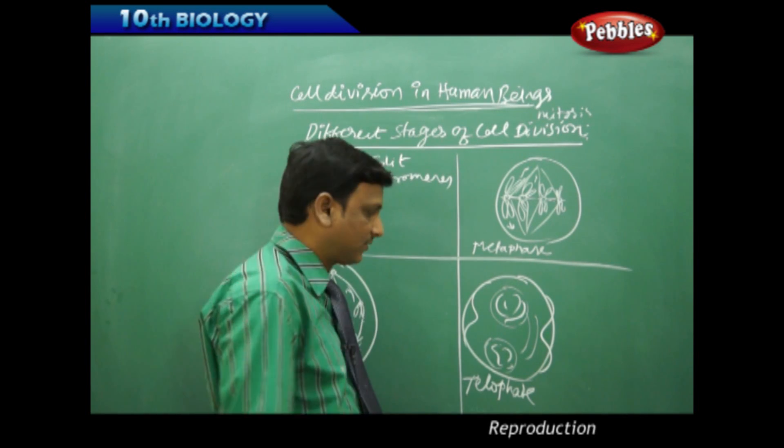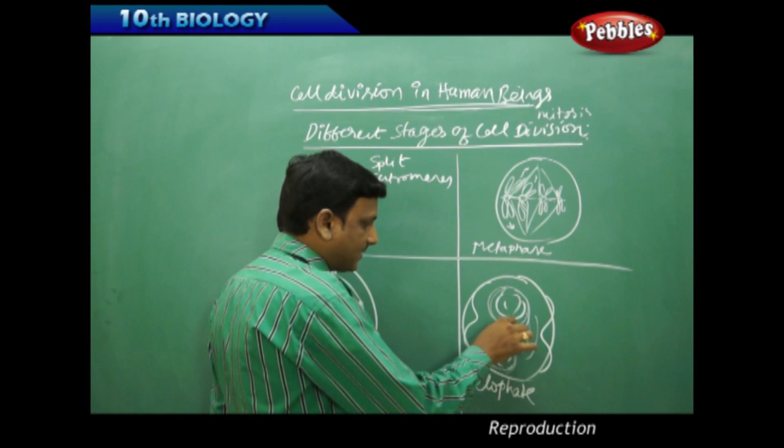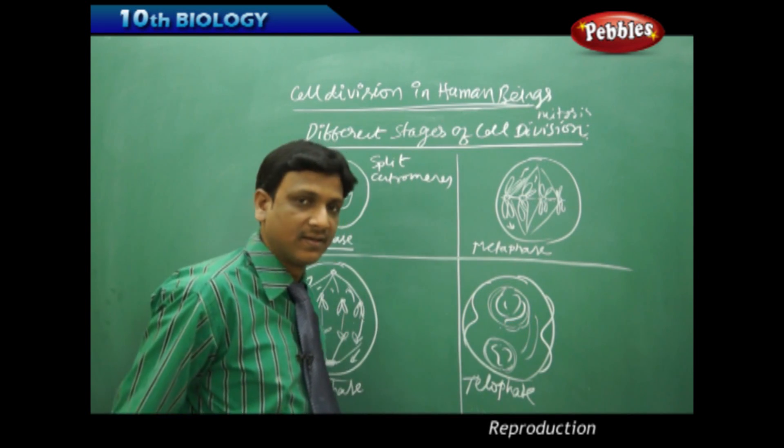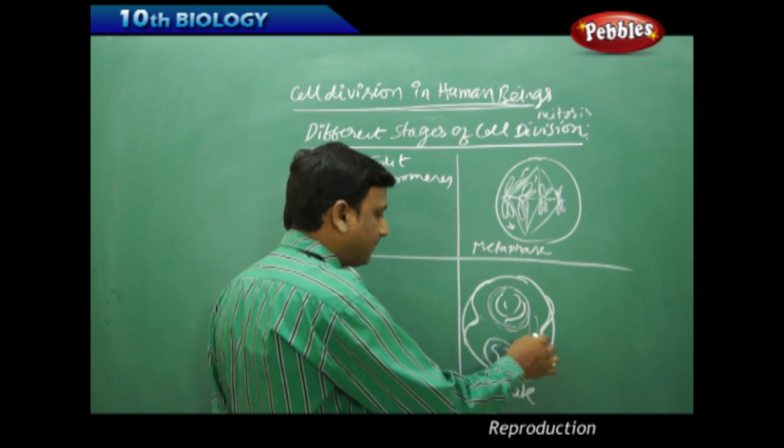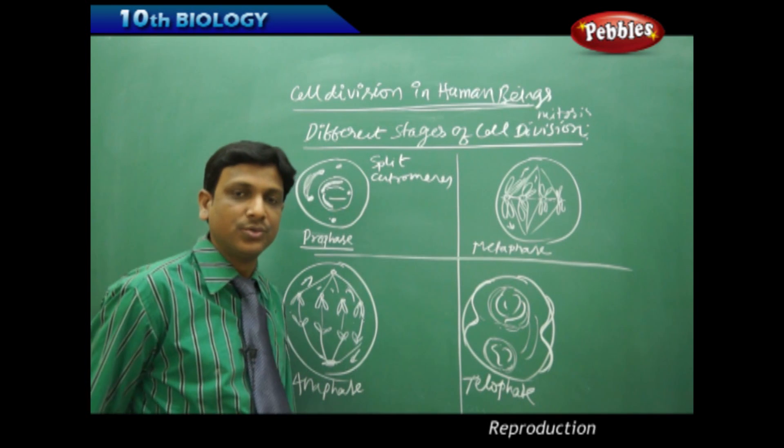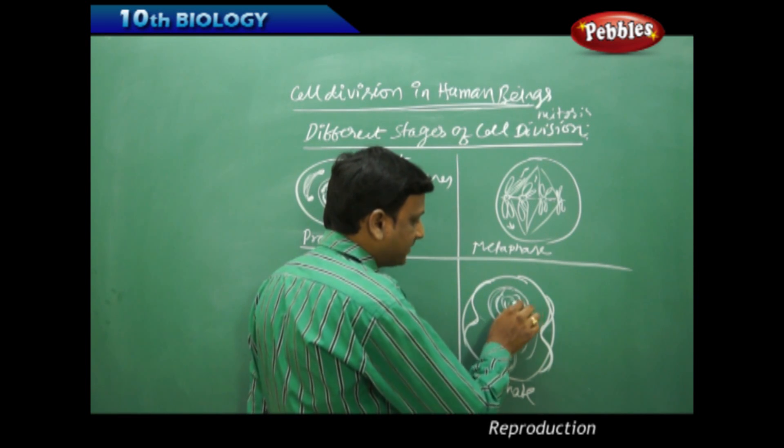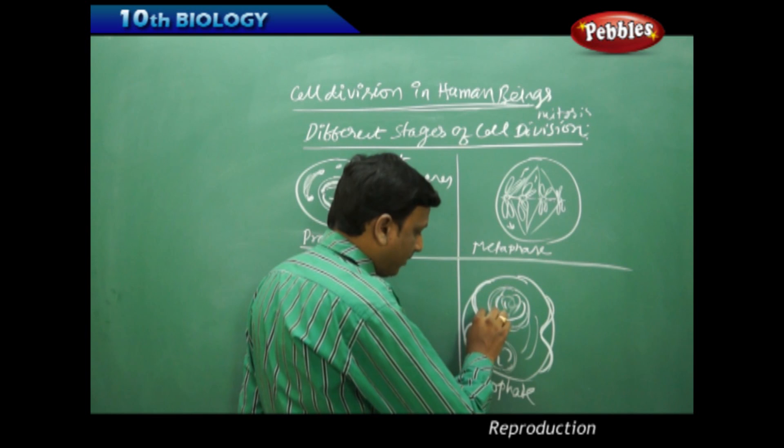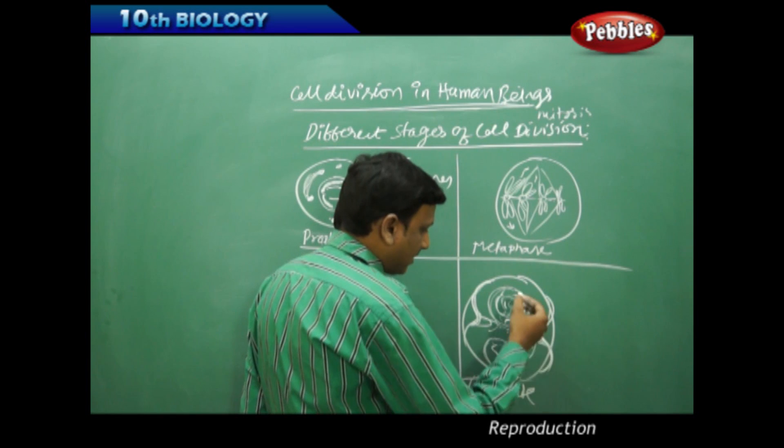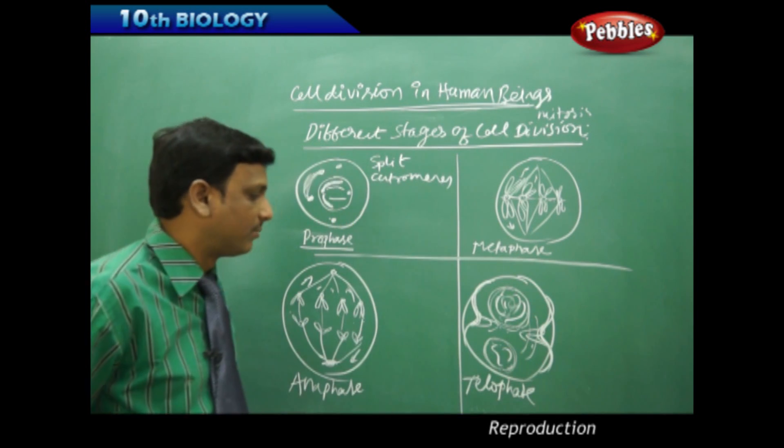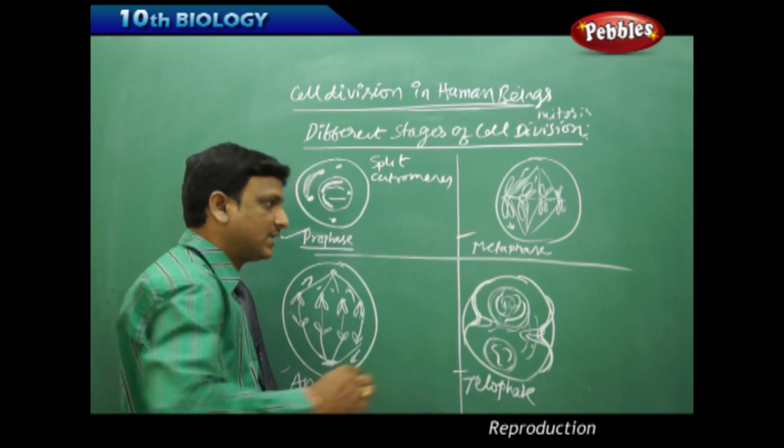In telophase, the nuclear membrane is again formed and the chromatids go to separate nuclei. The nucleus is divided and the cell organelles are dividing. There is a constriction in the cell membrane which develops to divide the cell into two equal halves. The chromatids disappear and form the genetic material again. This constriction in the cell membrane divides the whole thing into two cells. These are the four main phases observed in mitotic cell division.